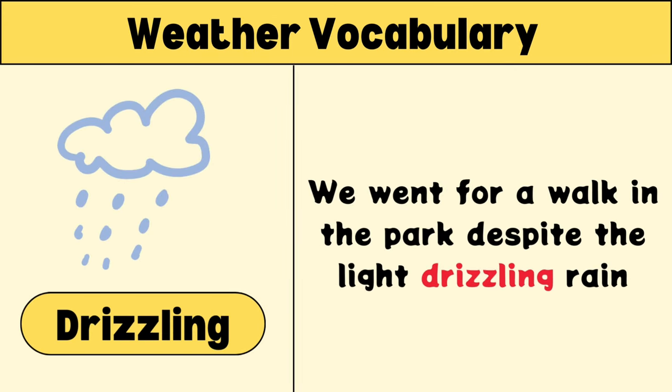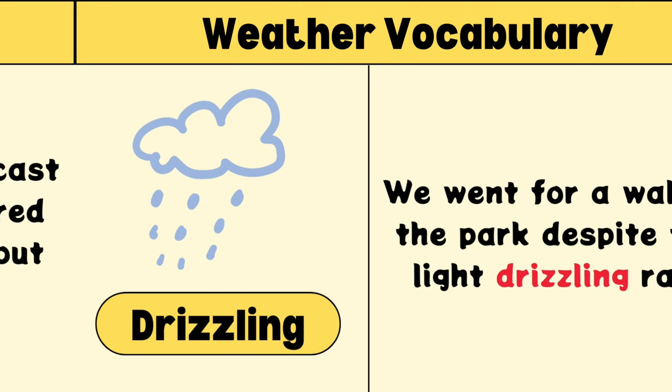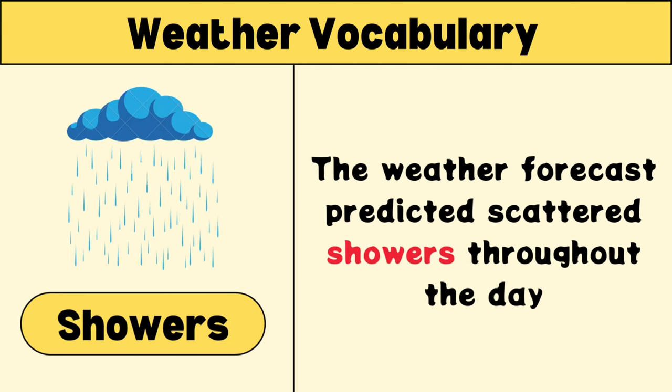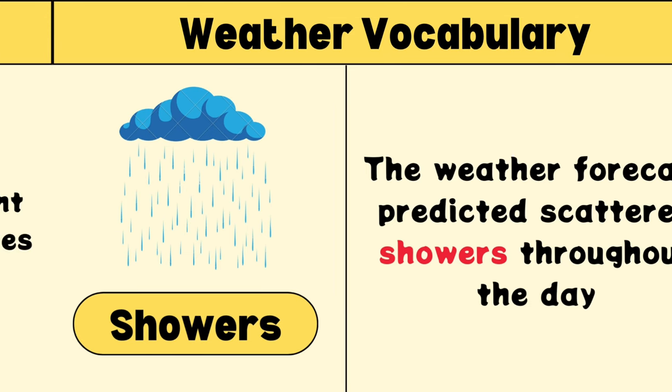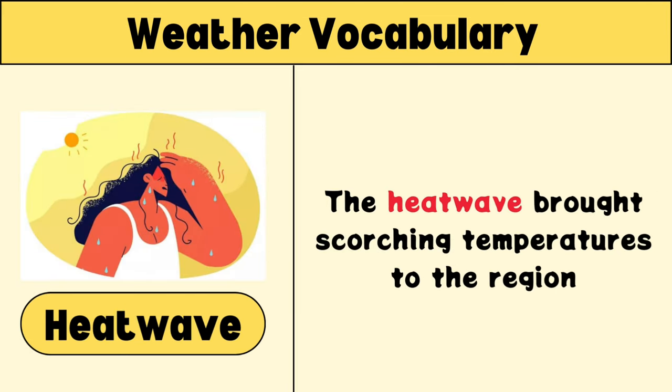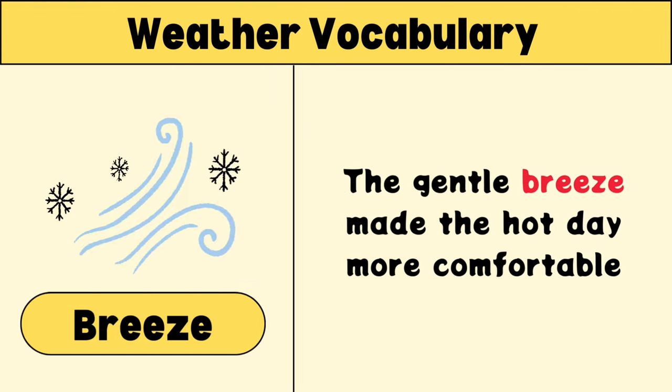Drizzling: we went for a walk in the park despite the light drizzling rain. Showers: the weather forecast predicted scattered showers throughout the day. Heat wave: the heat wave brought scorching temperatures to the region.